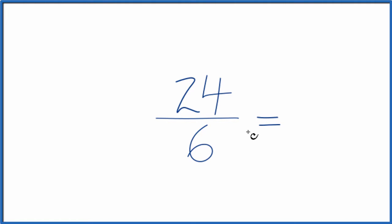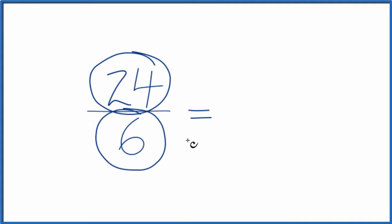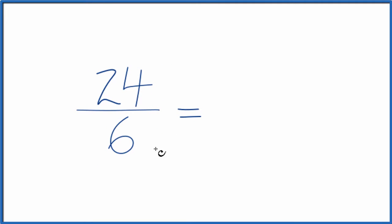To do that, we need to find a common denominator, something that goes into 24 and 6 evenly. So as I look at this, I know that 6 goes into 24, and 6 goes into itself.